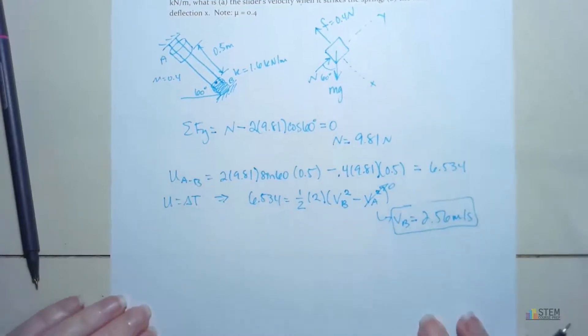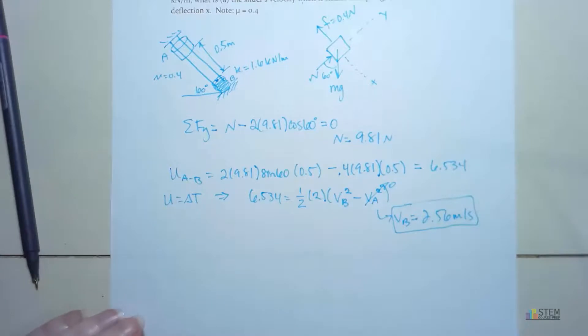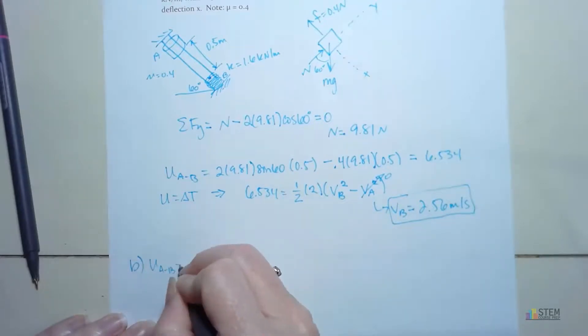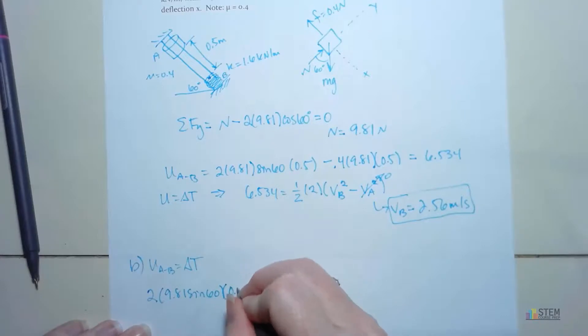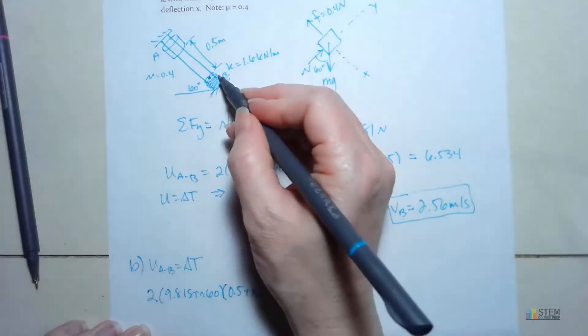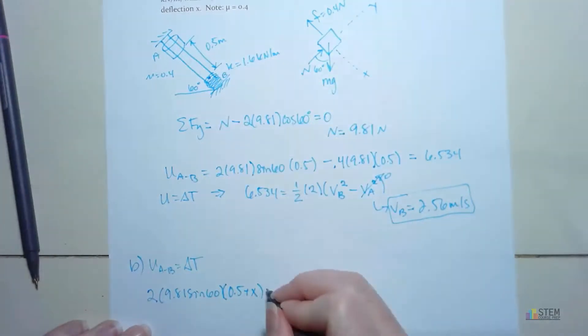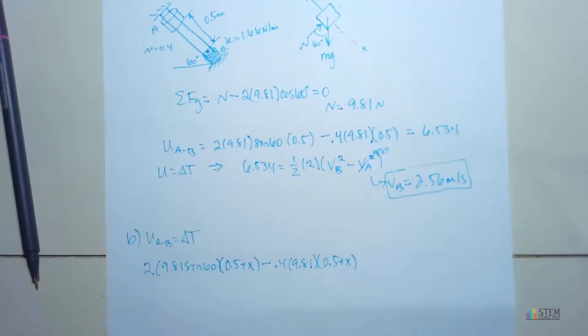Part B, we want to find the max deflection, X. So that's basically how far down the spring gets pushed once that mass hits it. So for this one, we're going to still use that equation right there. All we're going to do, though, is change our value we had for the displacement. So this will be an easy way to do it. So we're going to have 2 times the 9.81 sine 60. Now our distance is going to be 0.5 plus X, because the spring is going to get pushed down. So the amount it's pushed down is that X. Then we'll have minus 0.4 times 9.81 times the 0.5 plus X. And now are we done, or should we add something to that?